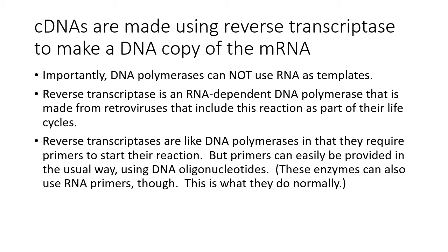cDNAs are made using reverse transcriptase to make a DNA copy of the mRNA. DNA polymerases make DNA but cannot use RNA templates — they can only use DNA templates. So we need reverse transcriptase to perform that reaction for us. These are RNA-dependent DNA polymerases, made from retroviruses that use this as a critical part of their life cycle. Reverse transcriptases are like DNA polymerases in that they require primers to start the reaction, and we can add oligonucleotides to our mRNA to provide primers.